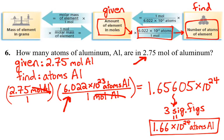And this number is a logical number because we have about almost 3 moles, a little less than 3 moles of our particular element.